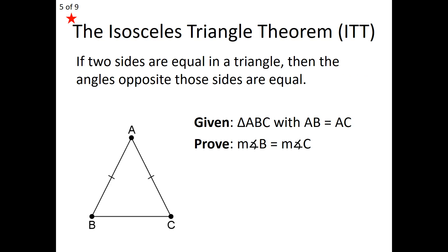Let me introduce you to our phenomenal theorem today: the Isosceles Triangle Theorem, or ITT. Here's what it says: if two sides are equal in a triangle, then the angles opposite those sides are equal as well. In triangle ABC, we have AB equals AC. The angle opposite side AB is angle C, and the angle opposite side AC is angle B. So we are given AB equals AC, and we are going to prove that angle B and angle C — the base angles — are in fact equal to each other.